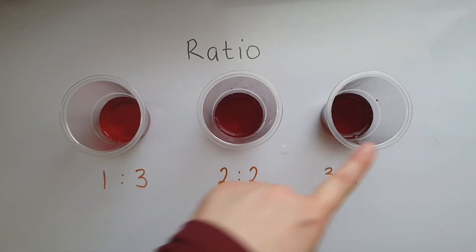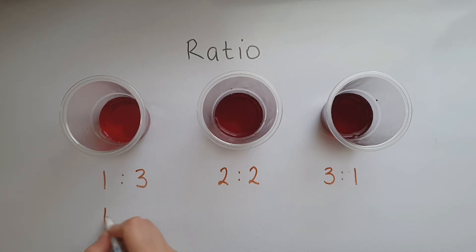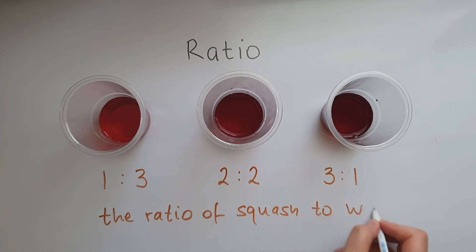First of all, the order of the words matters. We're saying the ratio of squash to water, so squash comes first. We have number one representing squash, and then water comes after, represented by three. Same here—squash, water.